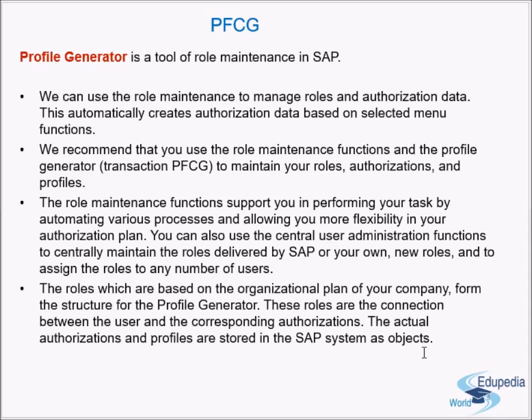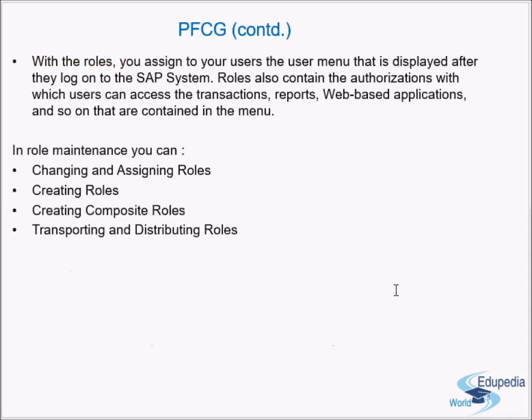The actual authorizations and profiles are stored in the SAP system as objects. When a user needs to get some authorization in the system, they are assigned roles. Through a role, a user is able to get whatever authorized access they need. At the bottom level we have authorization objects, activities, and authorization classes. A role is essentially a set of profiles.